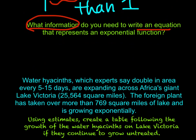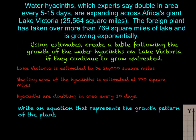So let's begin on a problem. We have this situation with water hyacinths. These are plants which experts say double in area every 5 to 15 days, and they're expanding across Africa's giant Lake Victoria, 25,564 square miles. The foreign plant has taken over more than 769 square miles of the lake and is growing exponentially.